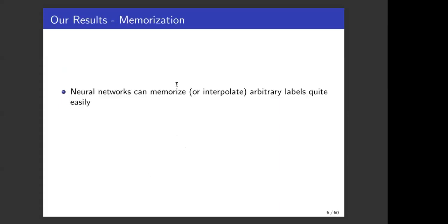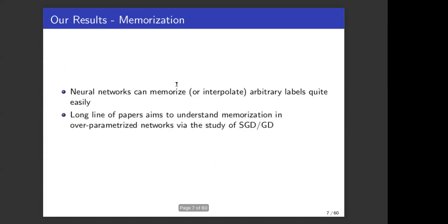First, I'll briefly describe the results that we obtain regarding memorization. We all know that neural networks can memorize arbitrary labels over arbitrary data very easily with very few neurons. A long line of papers aim to understand why this happens, why slightly over-parametrized networks are able to efficiently memorize these labels via the study of stochastic gradient descent or gradient descent on the data point.